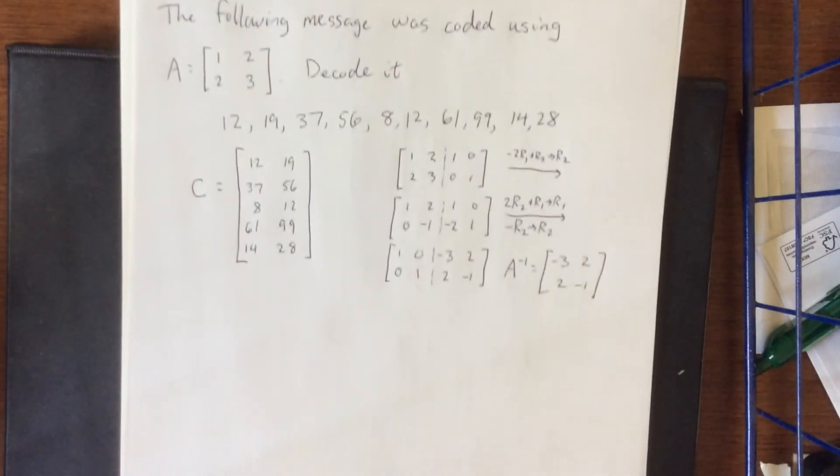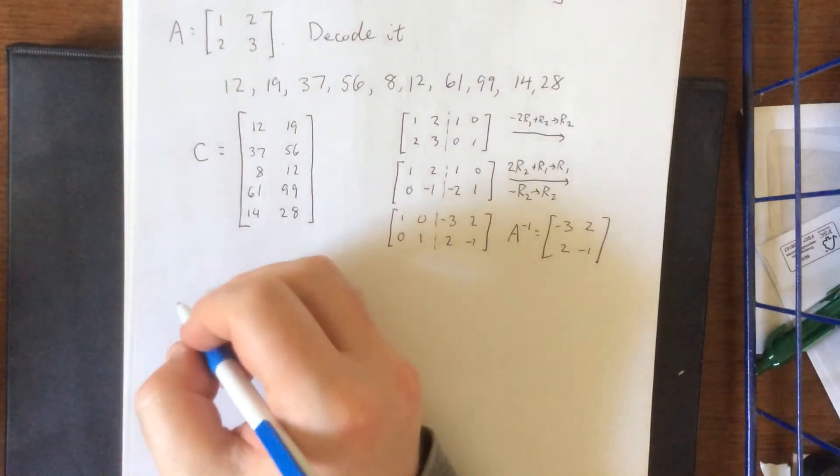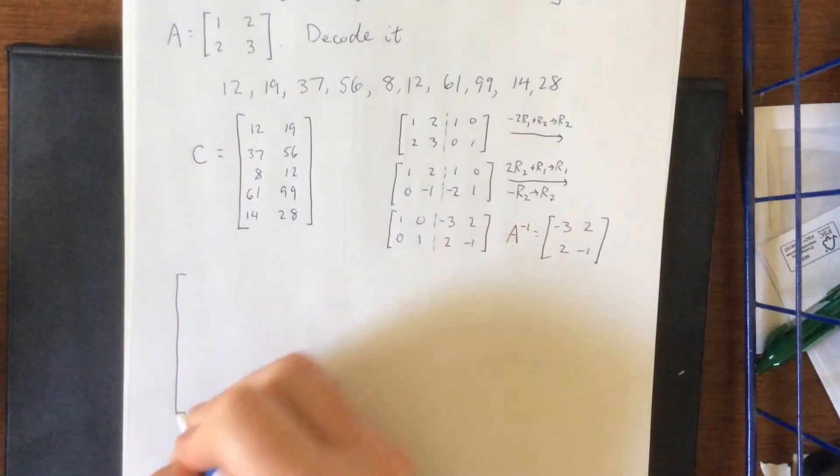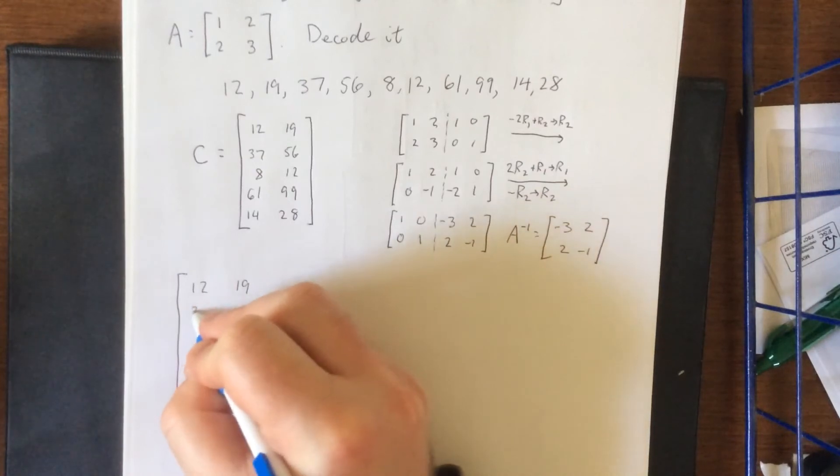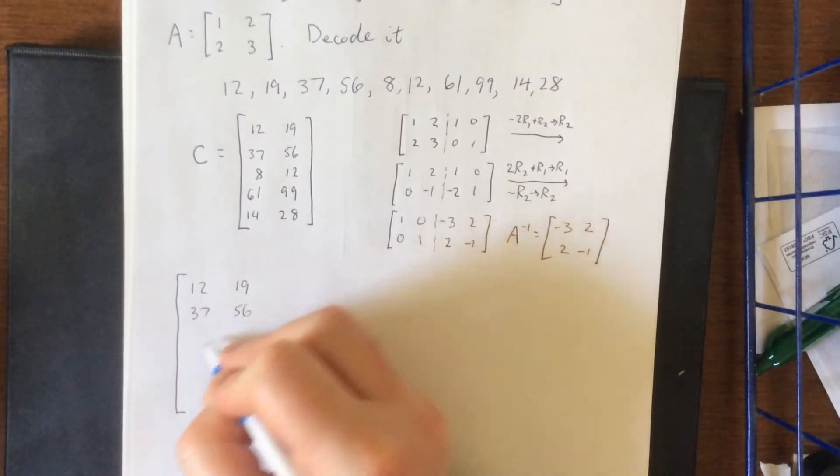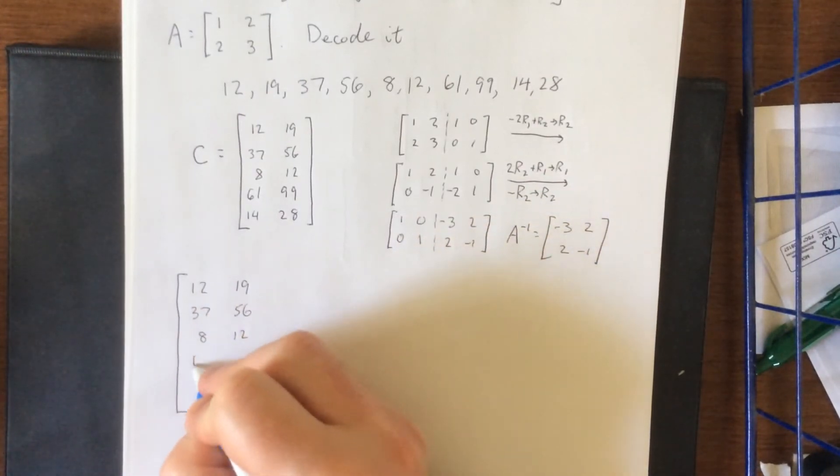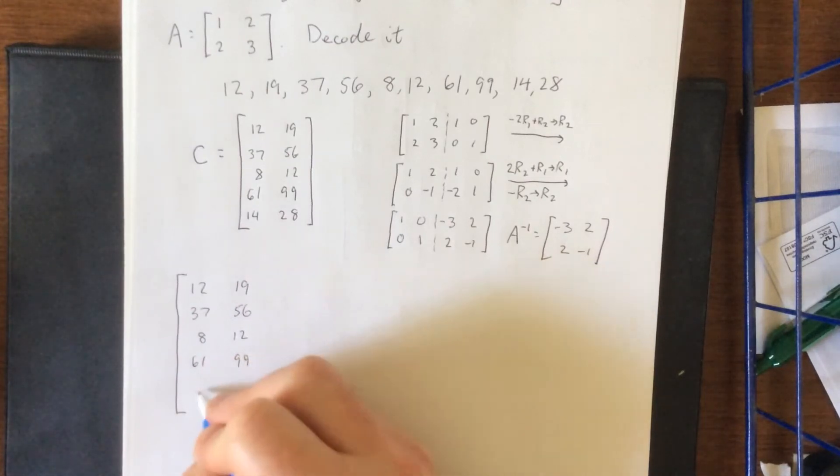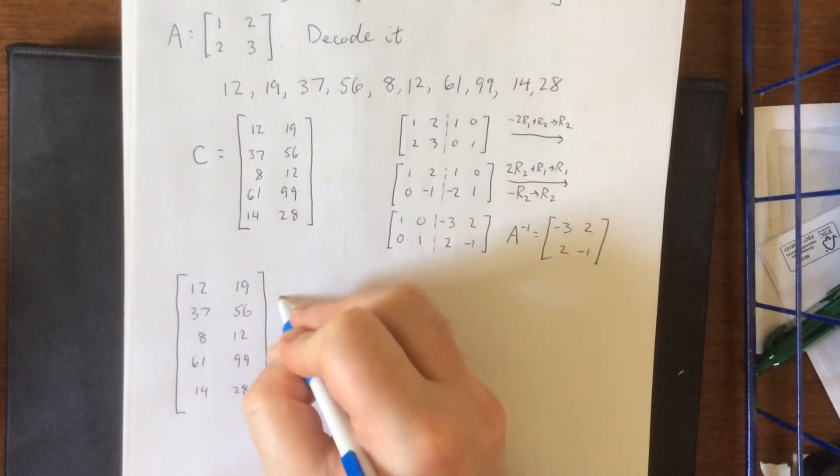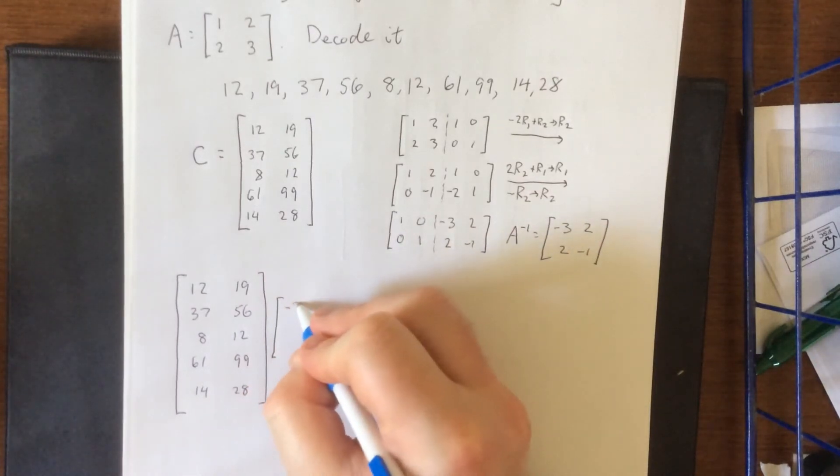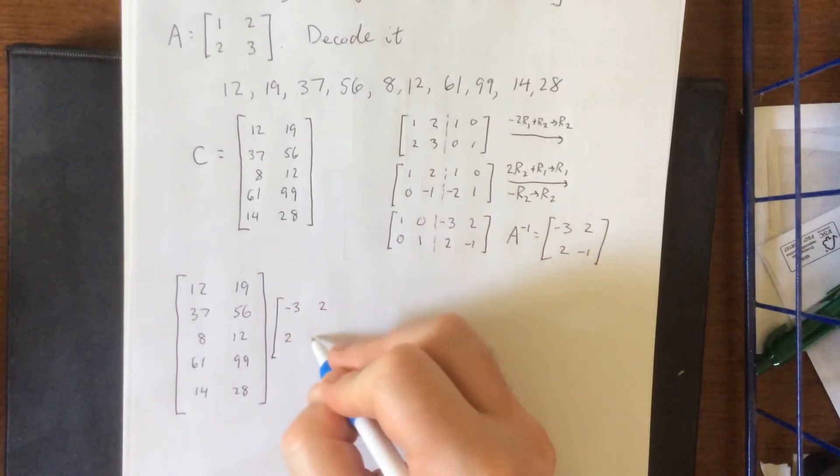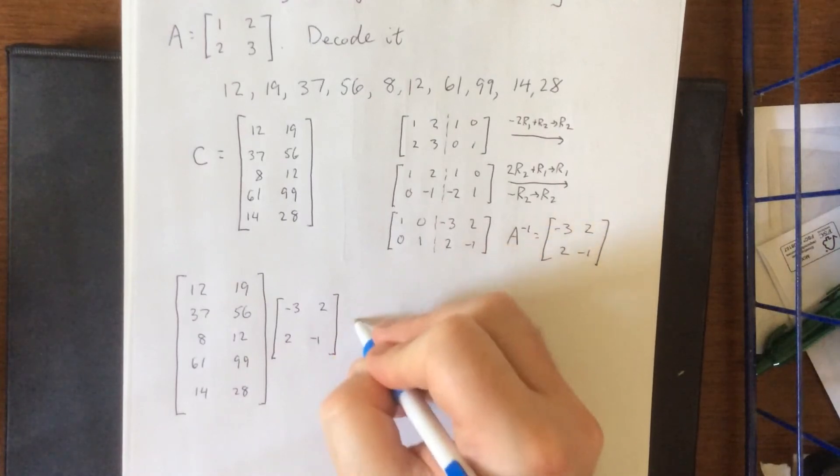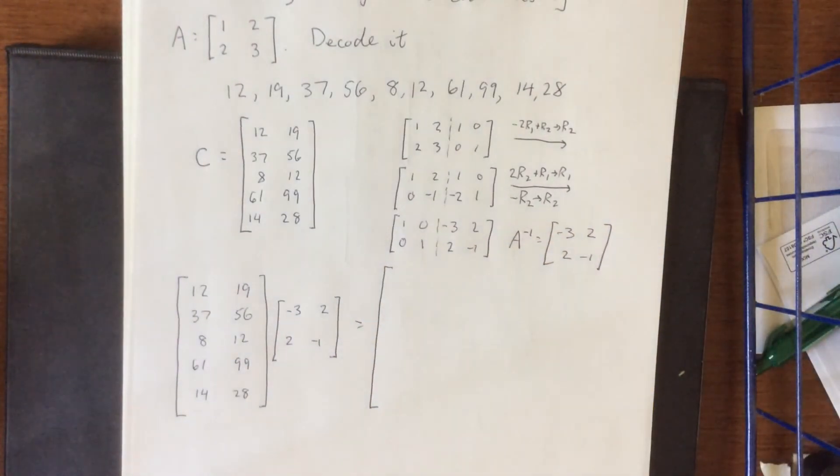I'm so excited to find out what this message is. So we will take our coded message, which is 12, 19, 37, 56, 8, 12, 61, 99, 14, 28. And we're going to multiply that by our decoding matrix negative 3, 2, 2, negative 1. Again, calculator would probably be helpful, but we're feeling pretty good today.